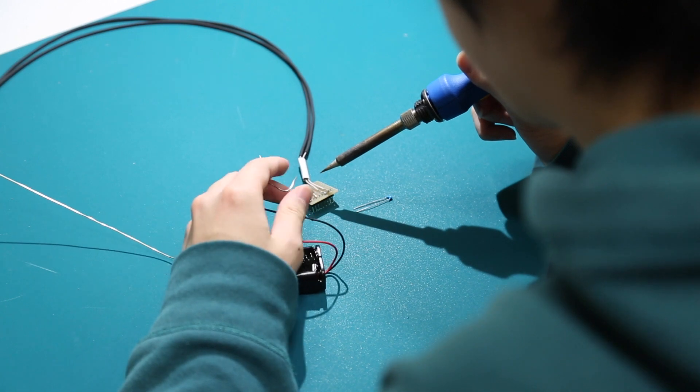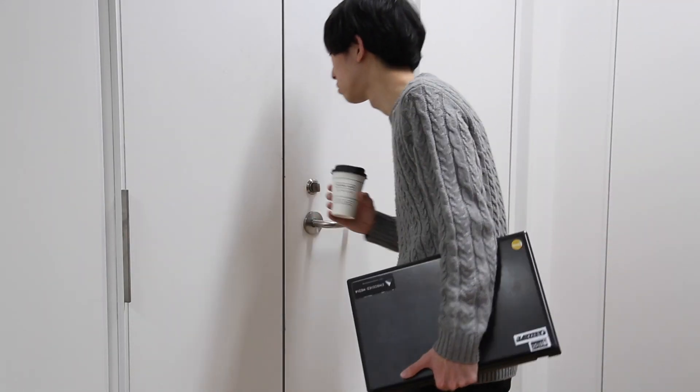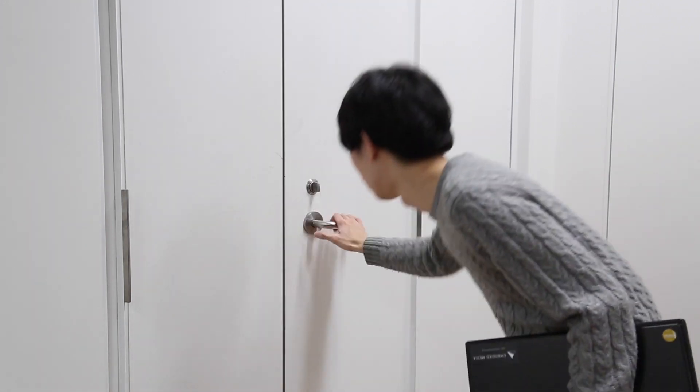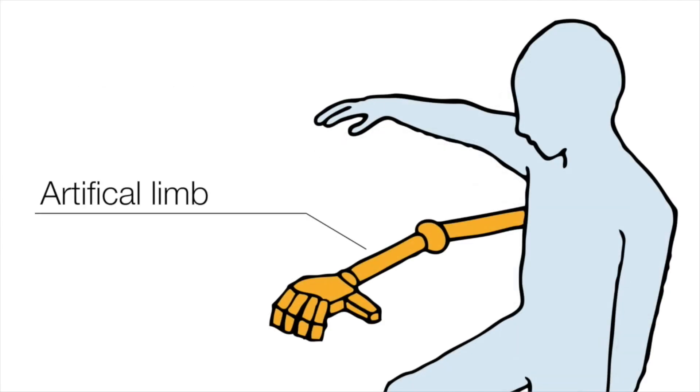Human bodies are capable of achieving complex tasks in our daily life. However, sometimes we face problems because of physical limitations and the number of limbs. We propose MetaLimbs, additional artificial limbs to your own body.